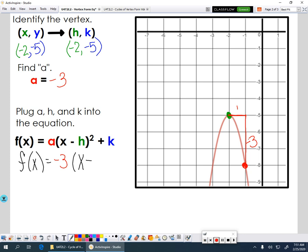And we have x minus h. Now, remember, our h value is negative 2. So if I do x minus negative 2, that's really a plus 2. So what we're going to do is we're going to make that a plus 2. And then we're going to continue on. And we're going to add our k value. And we're adding a negative 5.